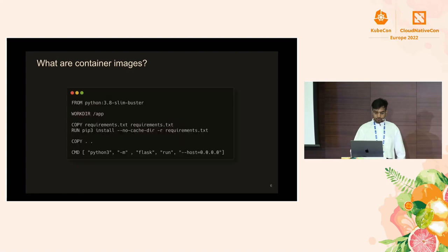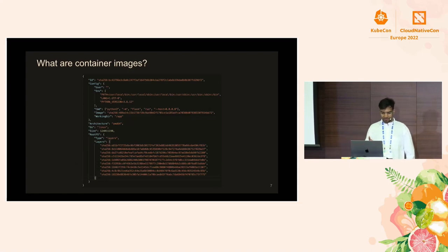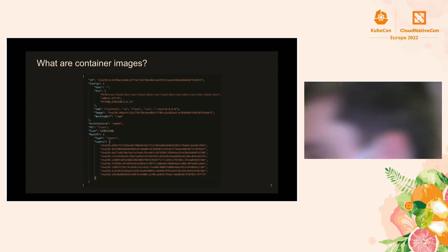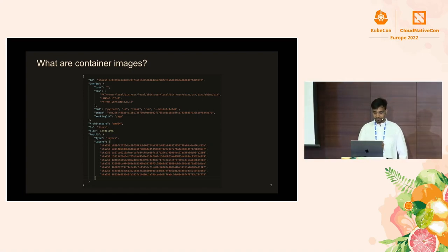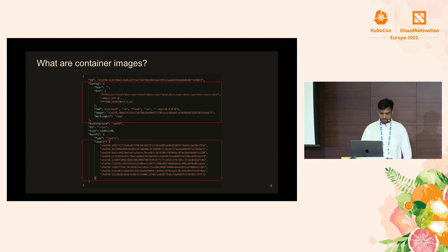Let's take a deeper look into this Dockerfile. It's fairly typical: starts off with a base image containing the Python interpreter, sets the working directory to /app, explicitly copies the requirements.txt file, then installs it using pip before copying the rest of the source code. Finally, we're setting the launch entry point so that Python spins up our Flask server and opens our web page.